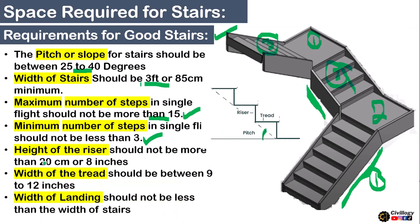The height of the riser should not be more than 20 centimeters or 8 inches, and the width of the tread should be between 9 to 12 inches. The vertical portion of a step is called the riser, and the horizontal portion of a step is called the tread. Also, the width of the landing should not be less than the width of the stairs. These are the basic requirements for good stairs which should be in your mind before designing or calculating the space for any staircase.